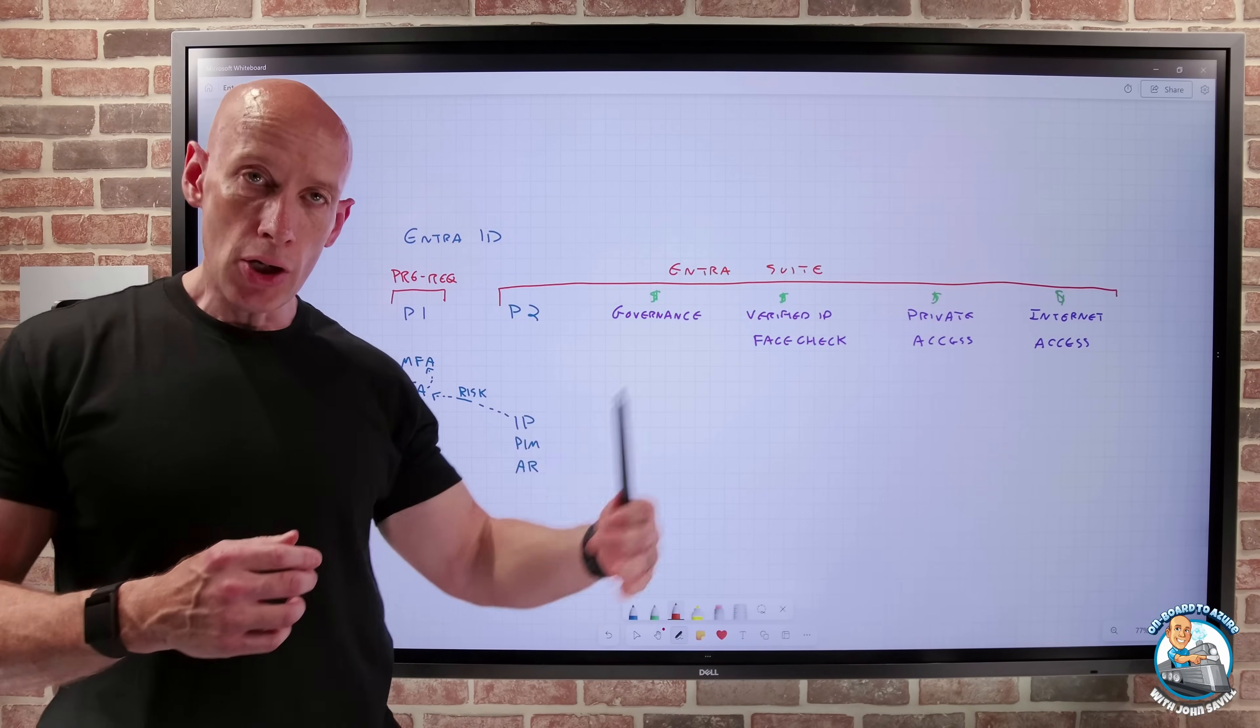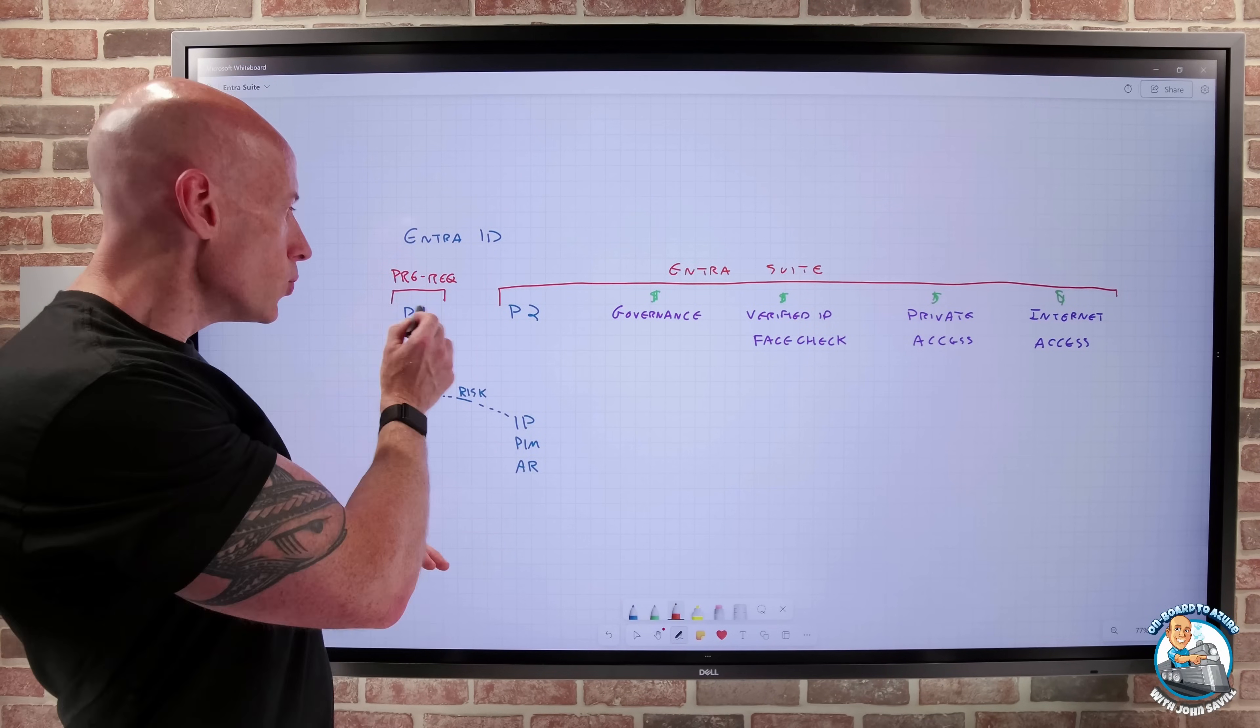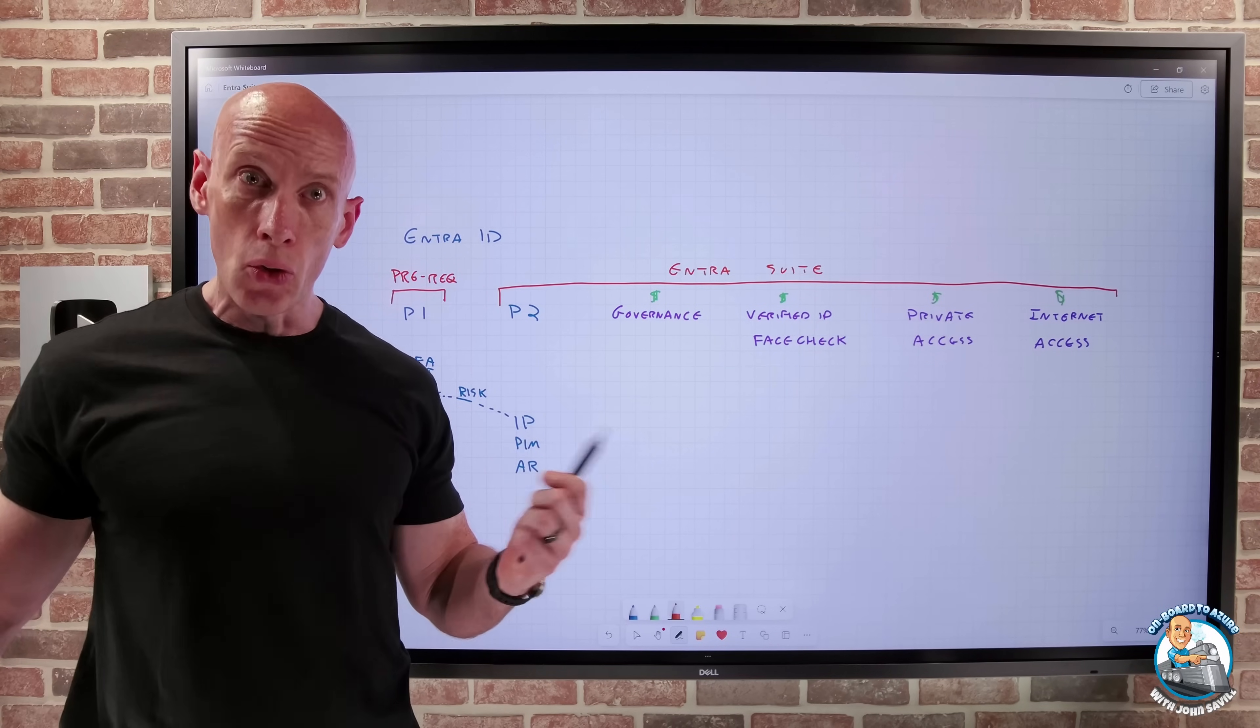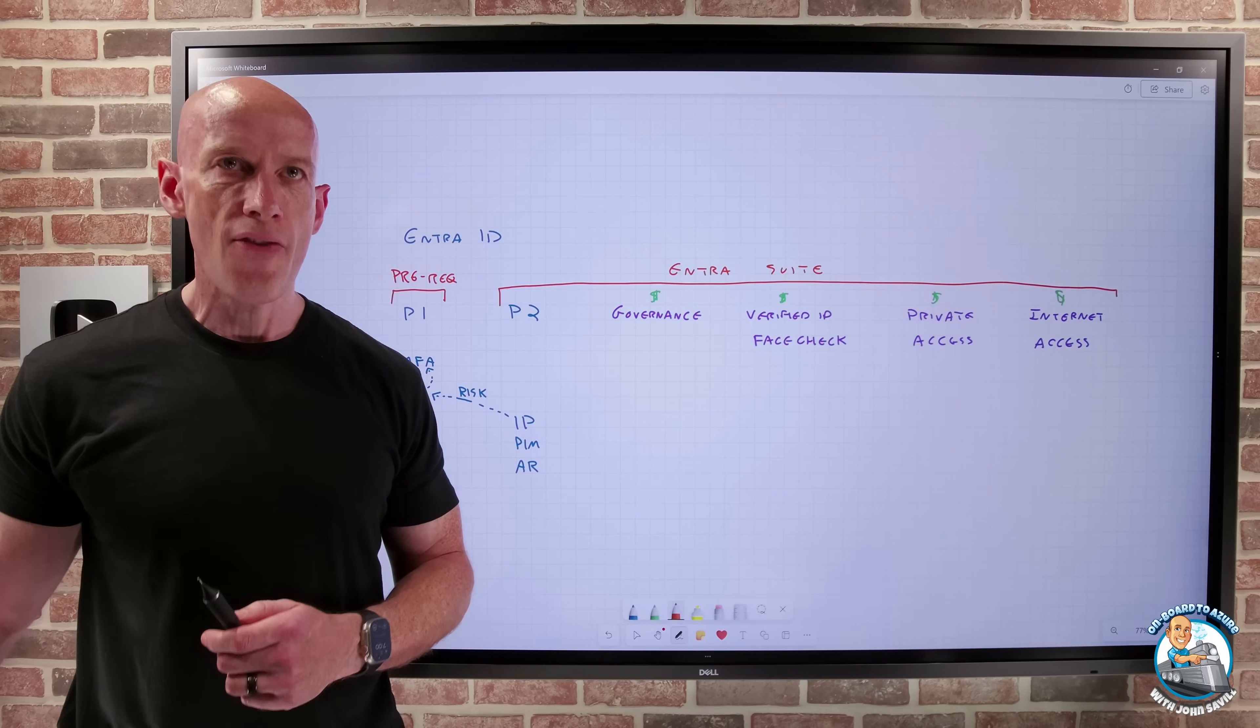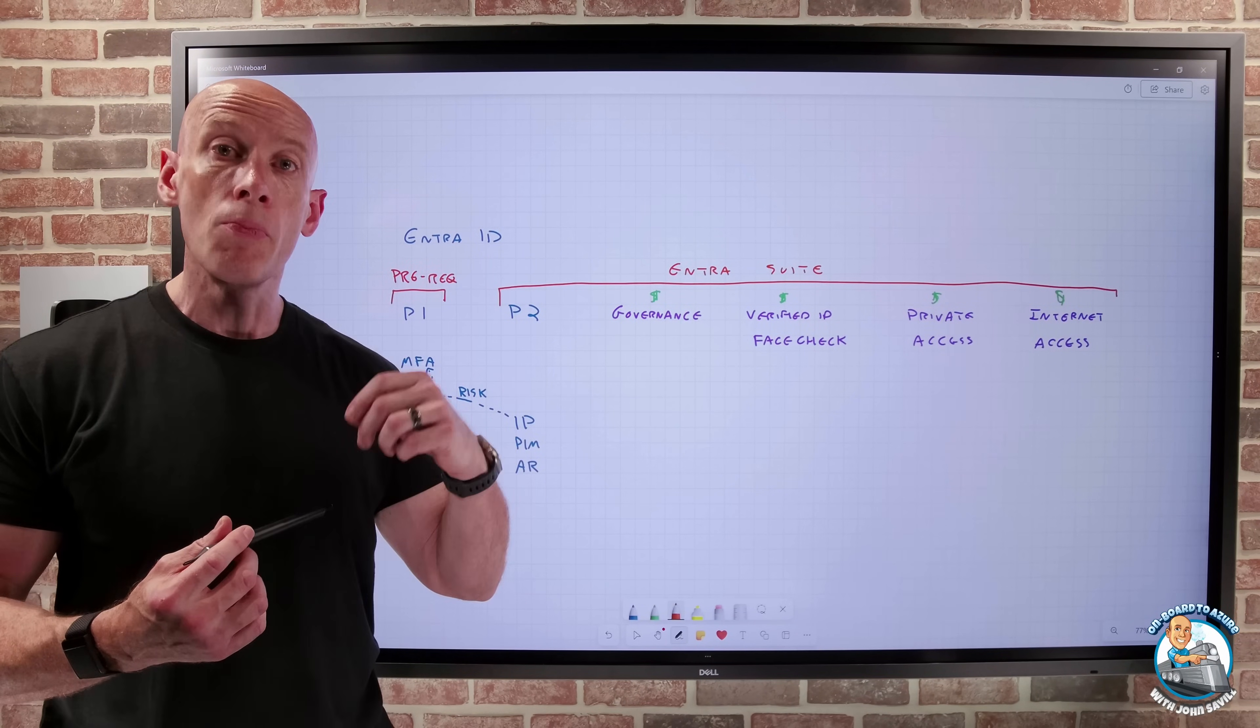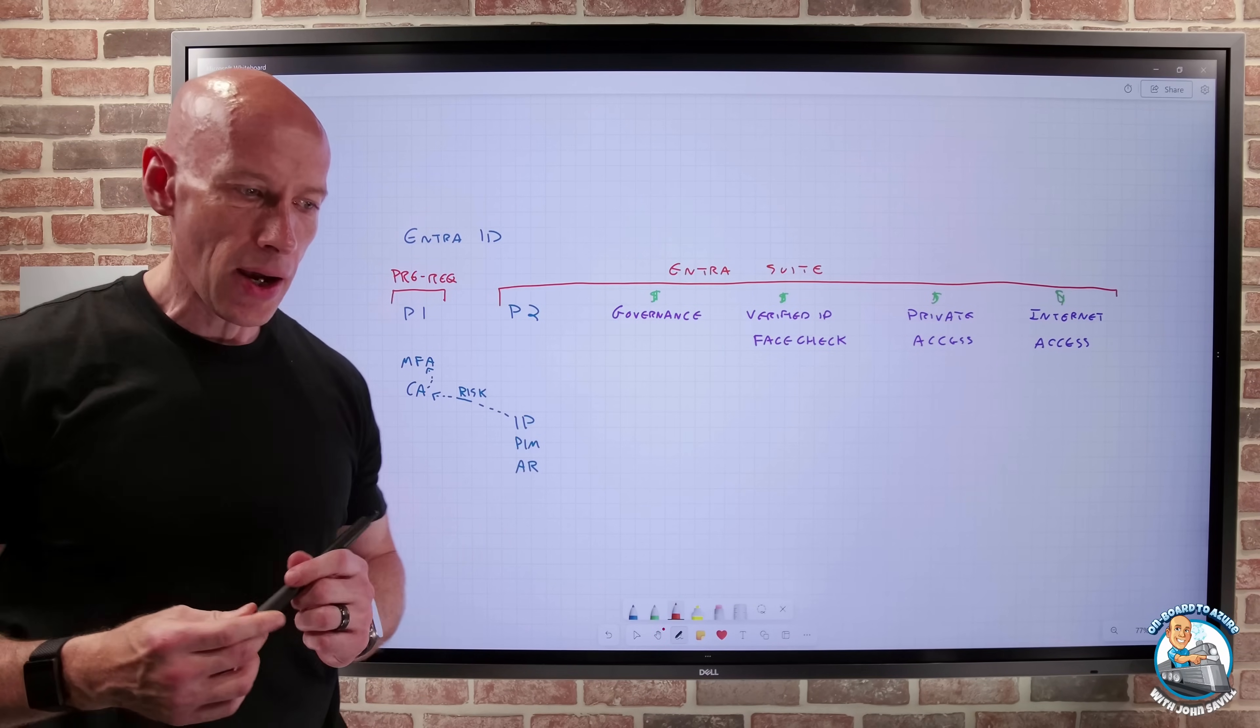And so that is a per user per month license. And again, they do need the P1 as well. Now, if you already have P2, obviously you have a number of those features there. And so you just work with the account teams. The account teams have various discounts and licensing mechanisms they can help leverage to step up. So I'm not paying for kind of something I already own.